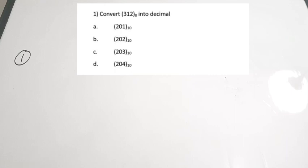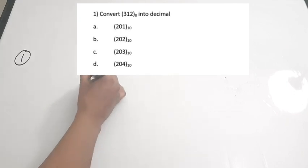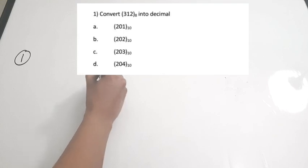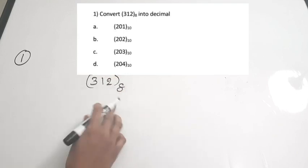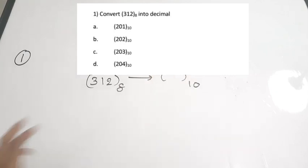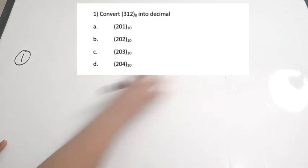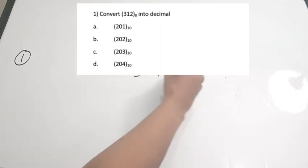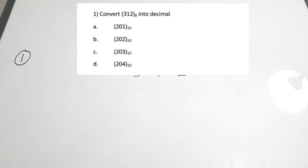The first question: convert 312 base 8 into decimal. You have to convert this octal number to decimal form. The number given is 3-1-2 to the base of 8 — it is in octal format — and you have to convert that to decimal, which is base 10.